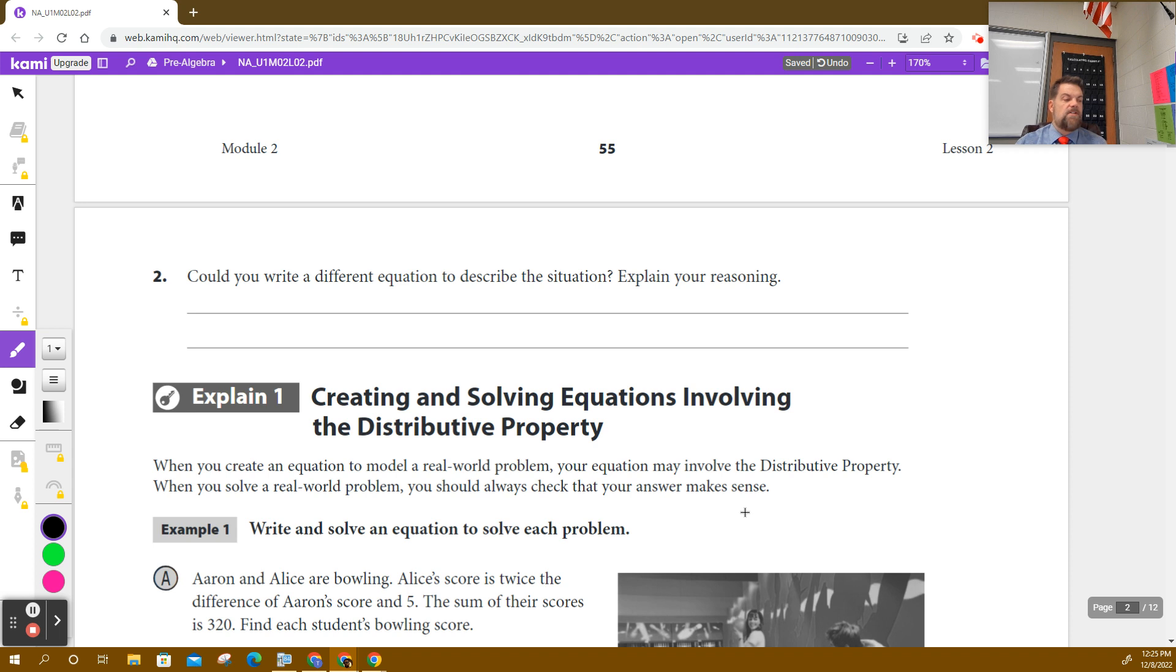So it says, could you write a different equation to describe the same situation? I mean, you can, sort of, but it's still basically got to be the same. So the answer I would say is yes. And you could write it like this. You could say $19.90 minus the cost of the ticket would equal $5.50. That's one way you write it. Or, you could say the cost of the ticket plus the cost of the second ticket plus $5.50 equals $19.90.